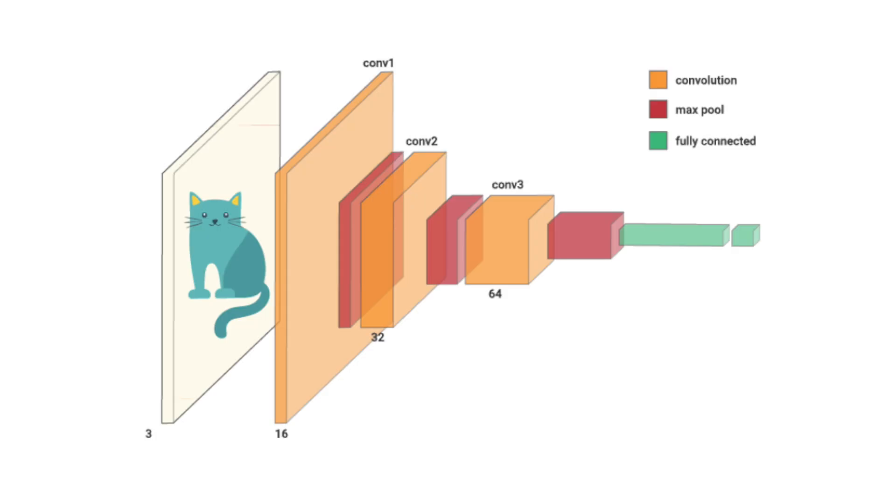For our problem, this will show us which pixels in the input image are used to classify the image as a cat. When applying the method more generally, there are a few more considerations. We've talked about applying the method to the final convolutional layer; however, you can apply it to any convolutional layer in the network or even a combination of layers.